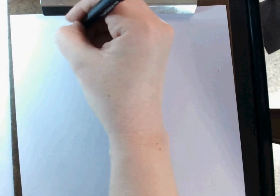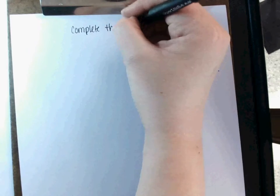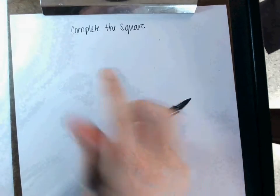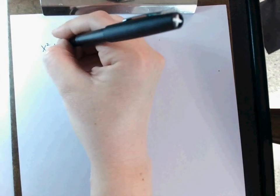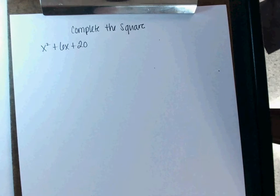Okay, so this is how complete the square works. Complete the square. Okay, so you are going to take whatever the term is in the middle. So let's say that you have x² plus 6x plus 20. Okay, this is what complete the square is.